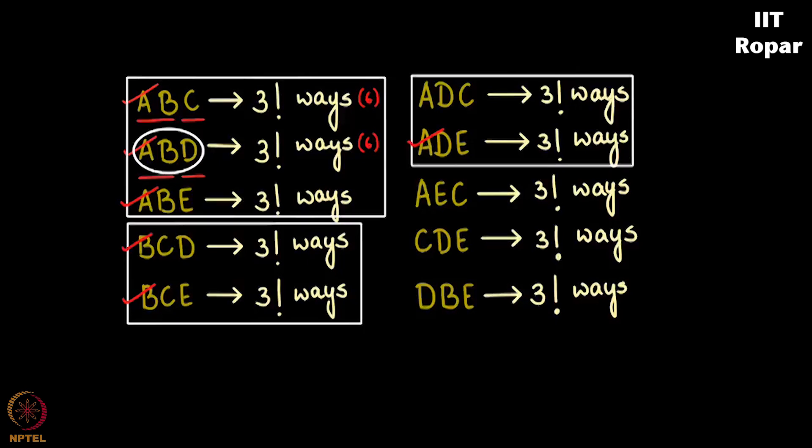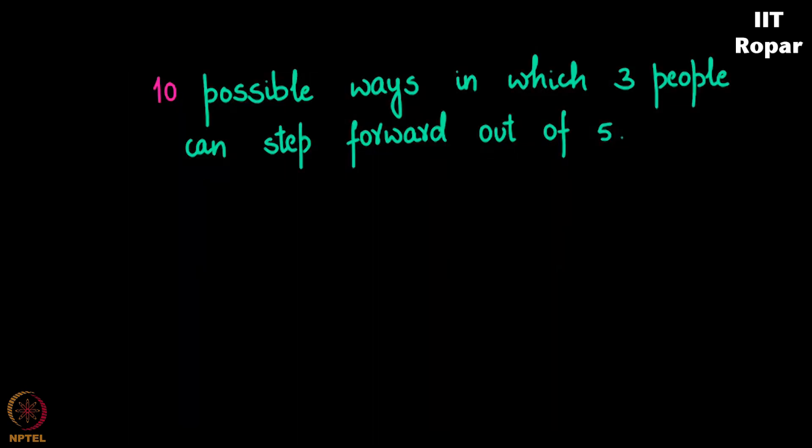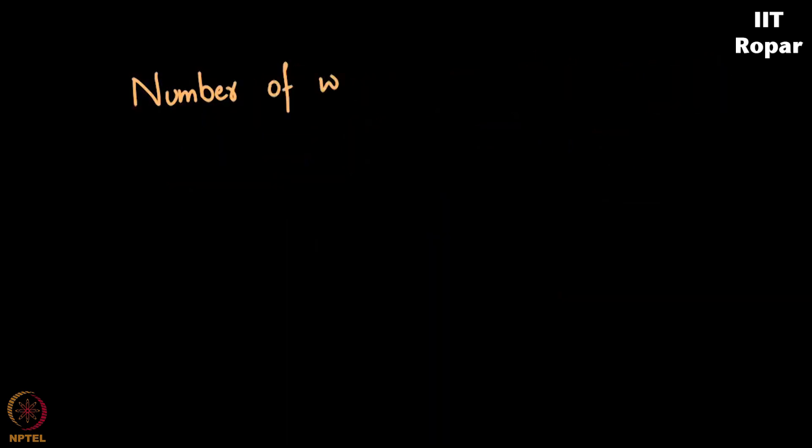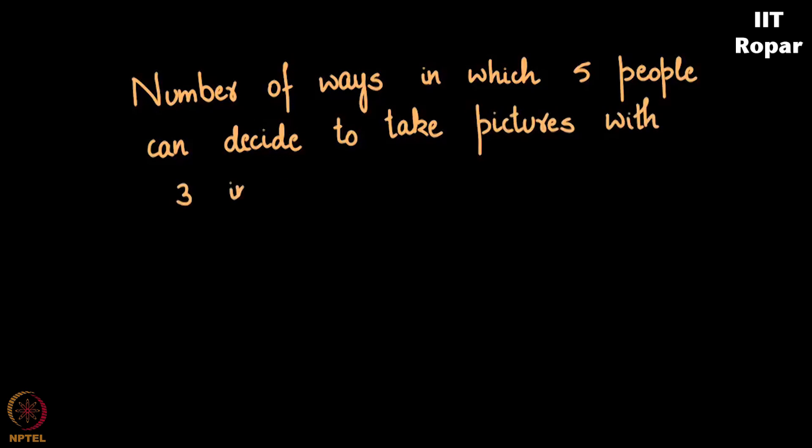They are precisely ten in number, and each of them can take pictures in six ways. So ten of them, each of them with six ways is going to be sixty ways. What did we just show? We showed that number of ways in which five people can decide to take pictures with three in each frame, all possible ways is going to be precisely sixty ways.